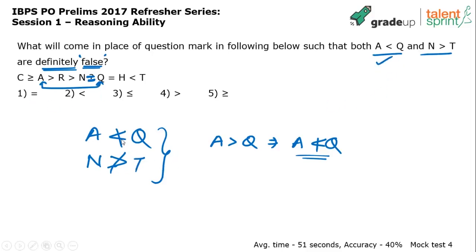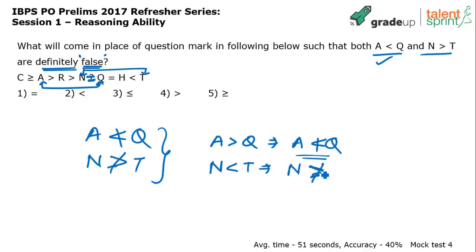Now check the second condition — compare n with t. n is equal to q, q is equal to h, h is less than t. So n, q, and h are all equal; if h is less than t, then n is also less than t. n less than t implies n is not greater than t, and that's exactly what we want. Both conditions — 'a less than q' is false and 'n greater than t' is false — are satisfied when option one is placed in the blank.